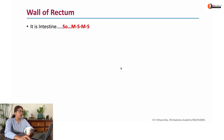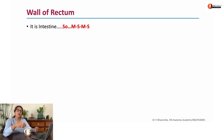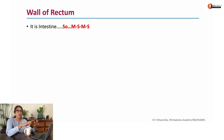What is the wall of the rectum made up of? It's a gut tube, made of the same four layers: mucosa, submucosa, muscularis externa, and serosa.